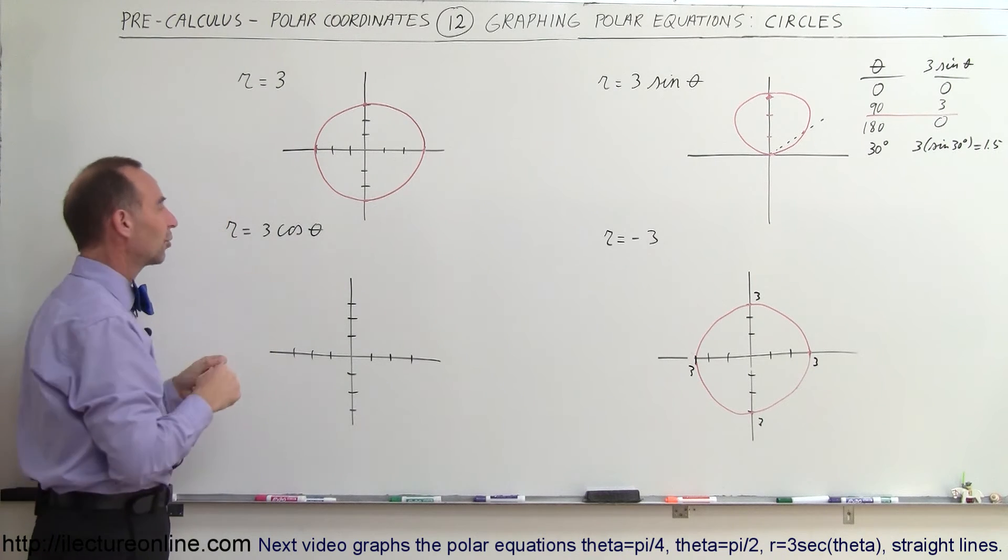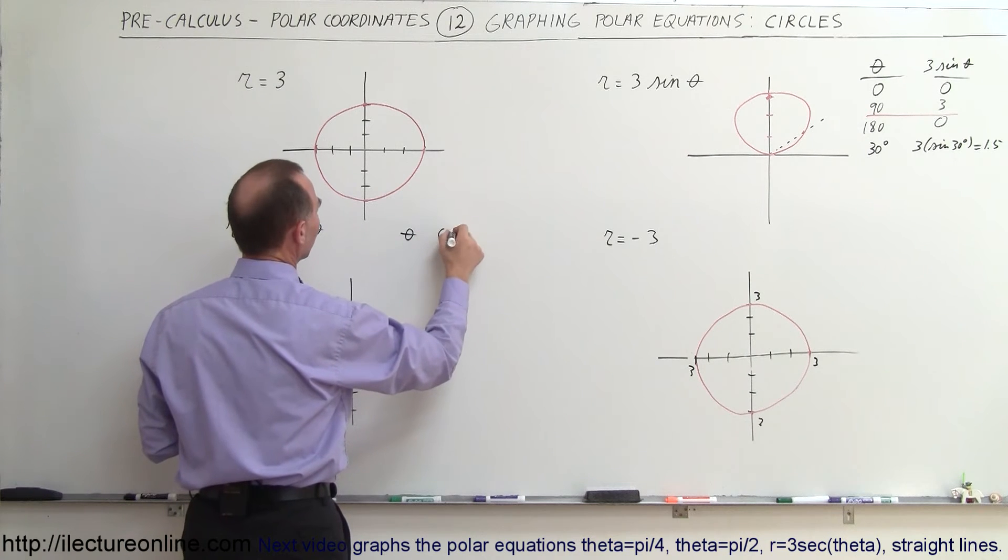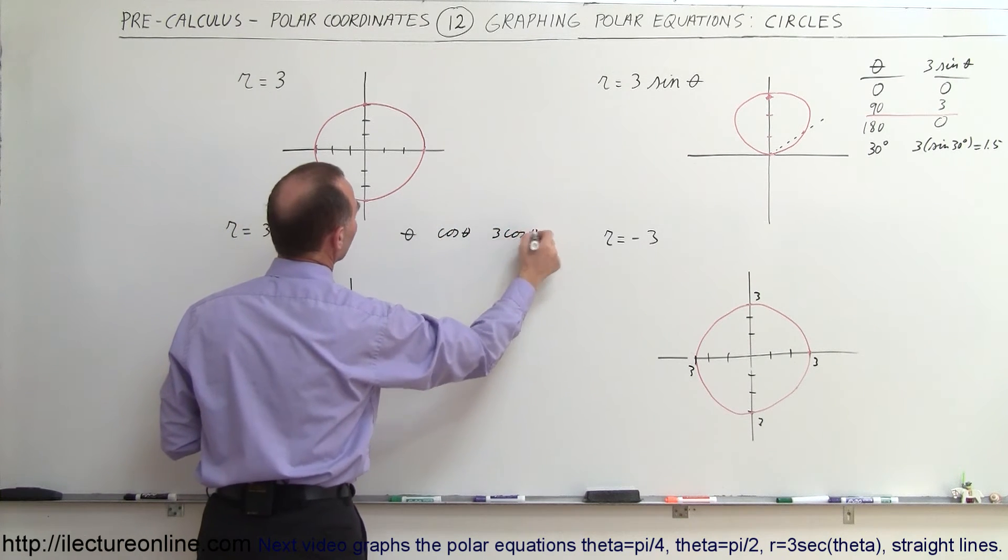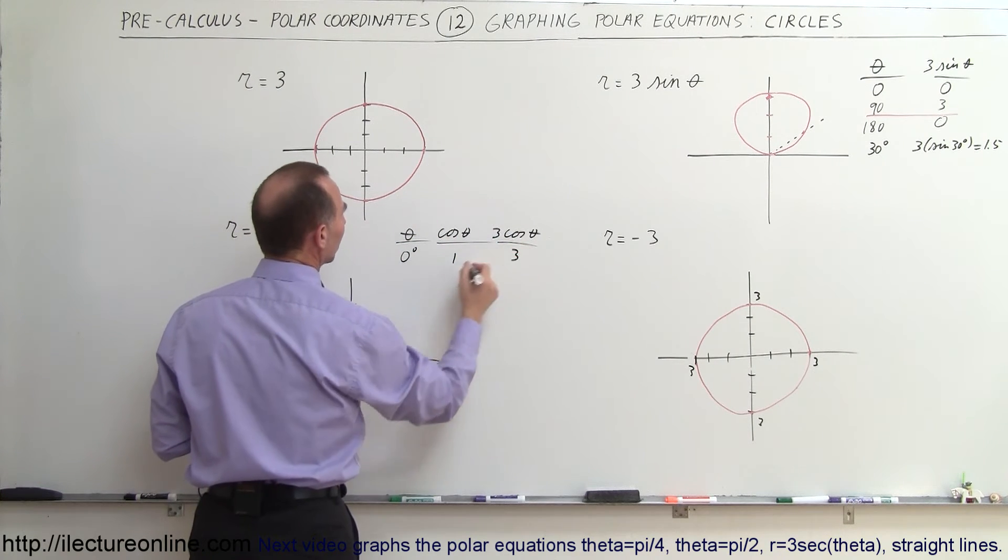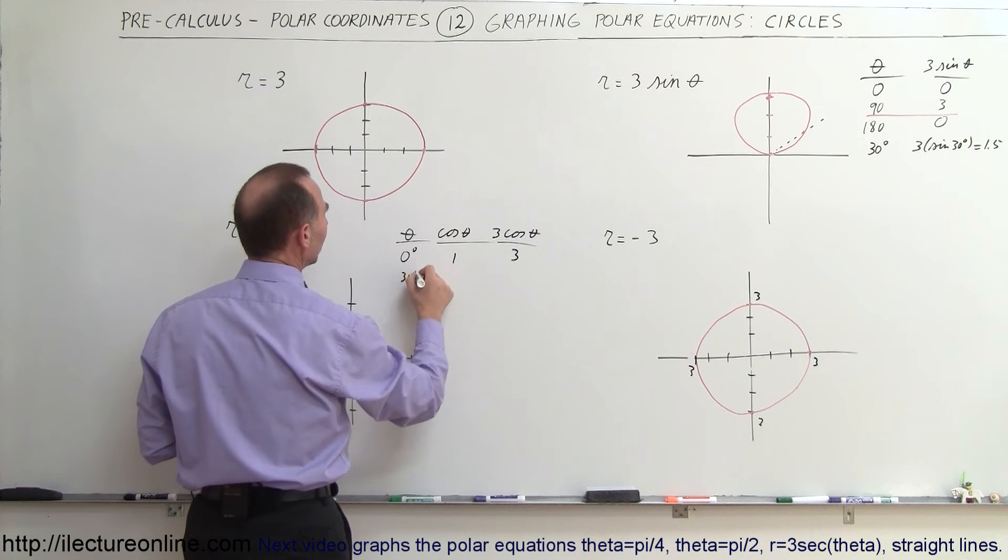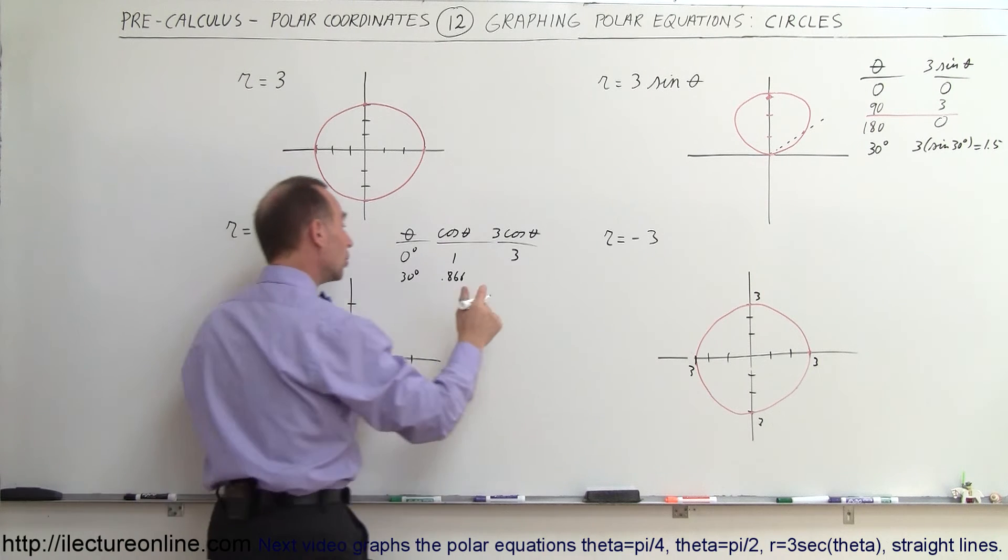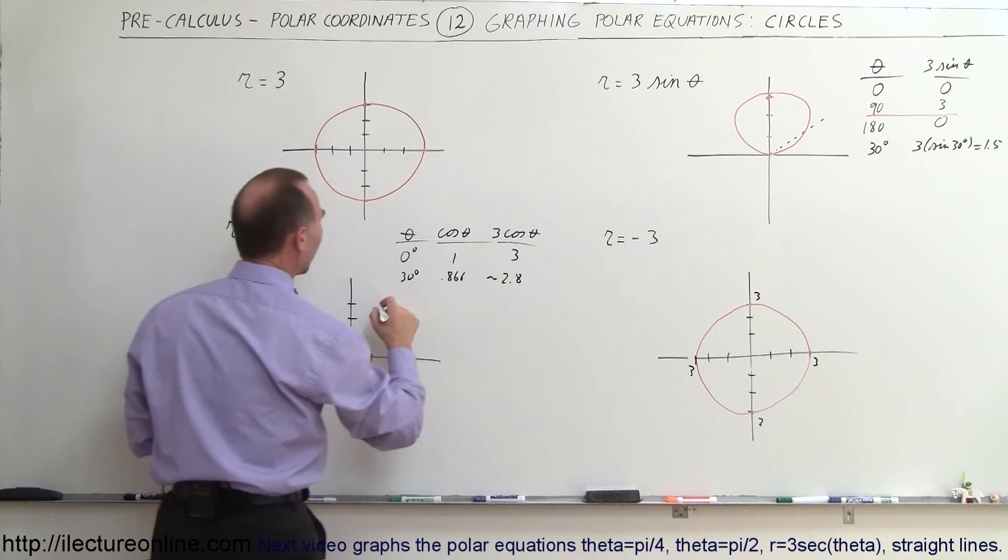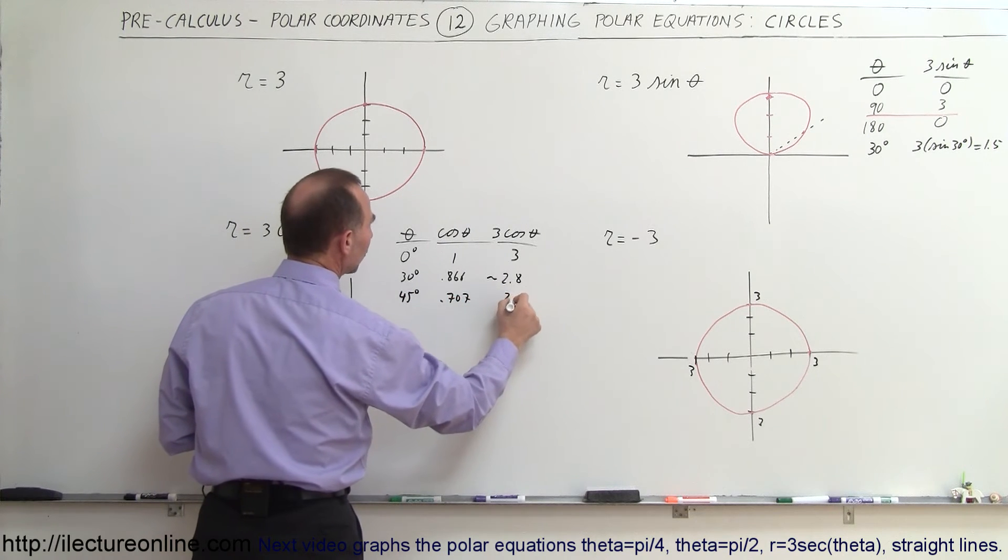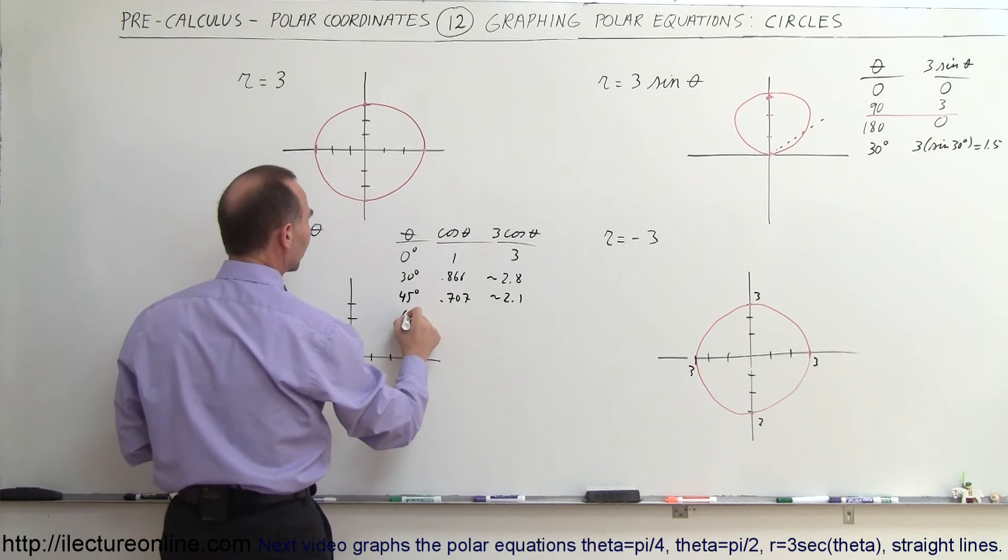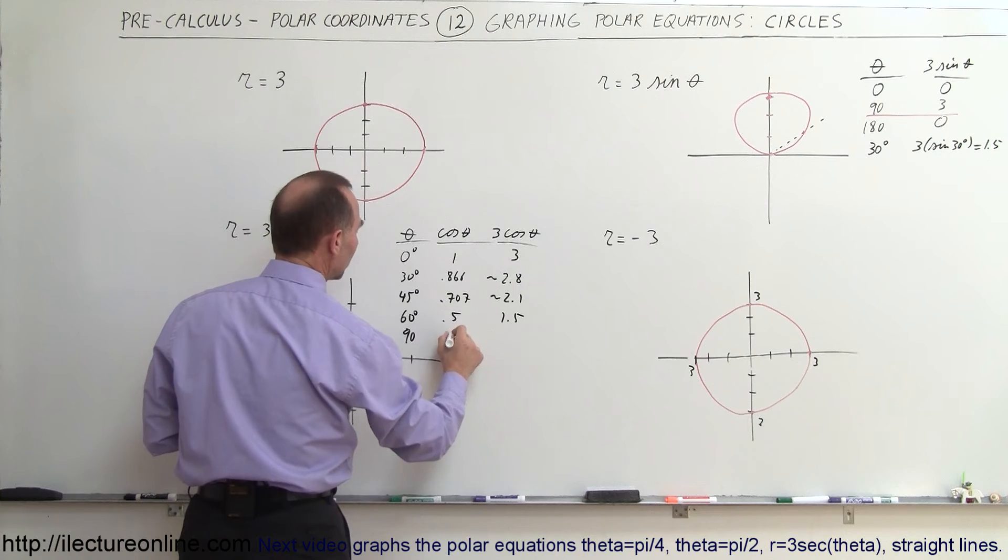Now let's try r equals 3 times the cosine of theta, and we'll do the same kind of thing. We'll plug in a few values. So I have theta, we have the cosine of theta, we have 3 times the cosine of theta. So at 0 degrees, the cosine of theta is 1. 3 times that would be 3. At 30 degrees, that would be 0.866. 3 times that would be about 2.8, approximately. And so at 45 degrees, it would be 0.707. 3 times that would be about 2.1. And at 60 degrees, that would be 0.5, that would be 1.5. And at 90 degrees, that would be 0 and 0.